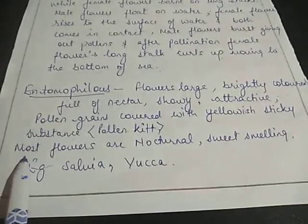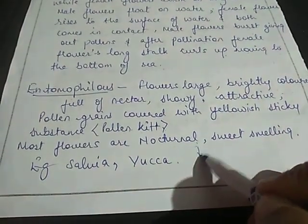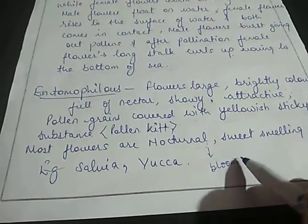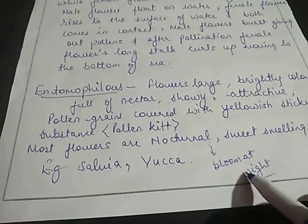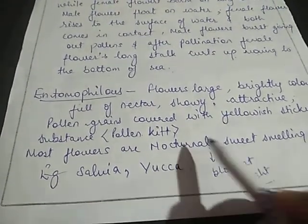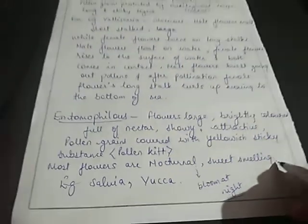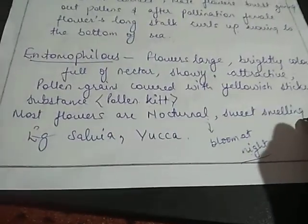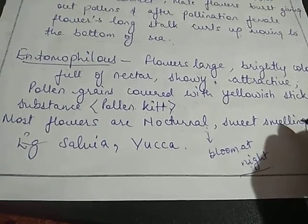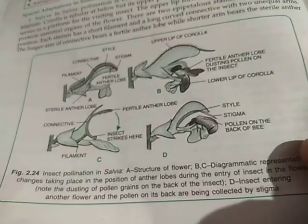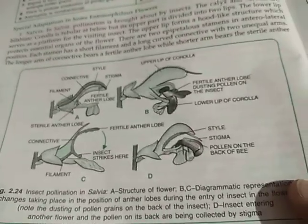Entomophilous flowers are mostly nocturnal — meaning they bloom at night. These flowers are sweet-smelling, and when insects reach them the pollination is carried out as the insects carry all the pollen.